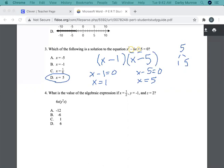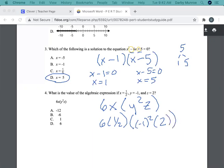Number 4. What is the value of the algebraic expression if x equals 1 half, y is negative 1 and z is 2. So we have 6x times y squared times z. So x is 1 half, 6 times 1 half for x. And then it says y is negative 1. So negative 1 squared and z is 2. So all I'm doing is substituting in the values for the letters or the variables. So half of 6 is 3. Negative 1 squared is just negative 1 times negative 1 is positive 1, times 2. And 1 times 2 is just 2. So 3 times 2. That equals 6.